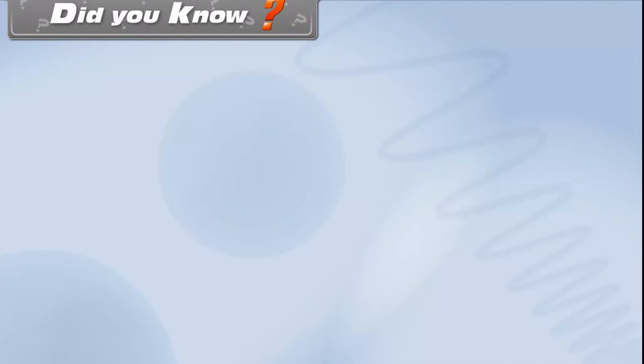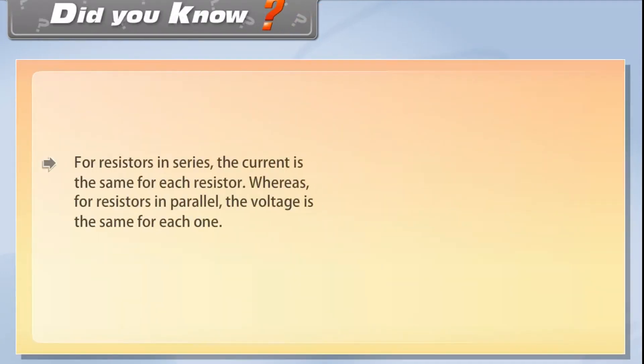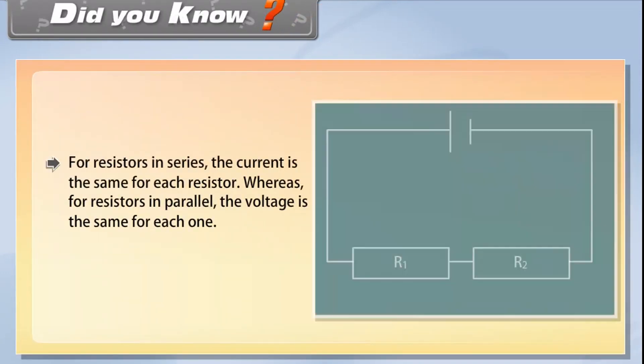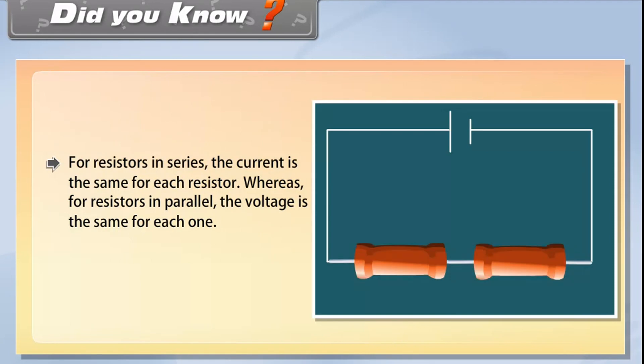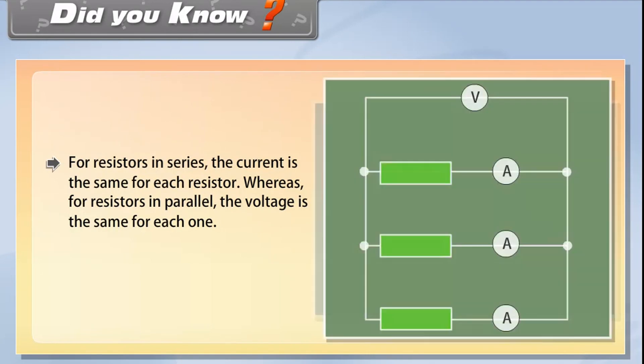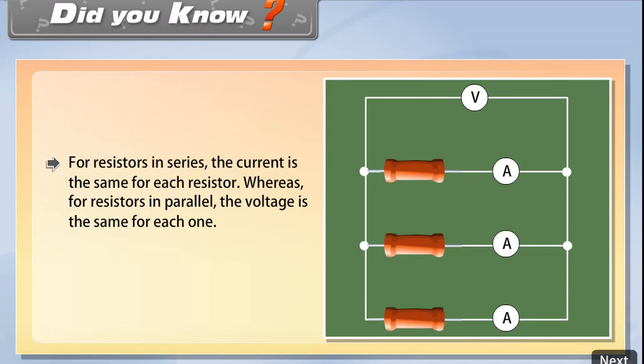Did you know? For resistors in series, the current is the same for each resistor, whereas for resistors in parallel, the voltage is the same for each one.